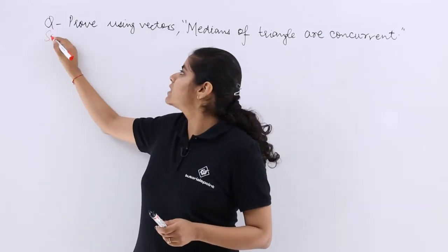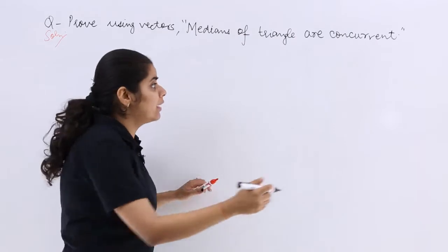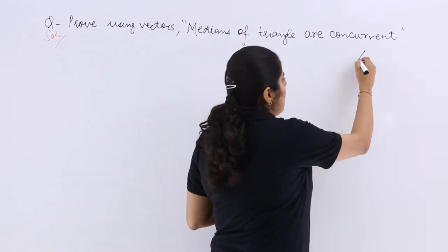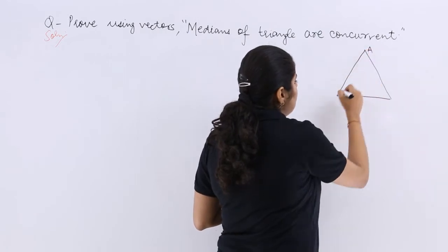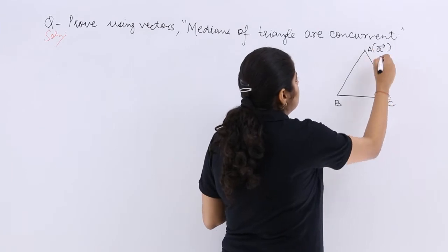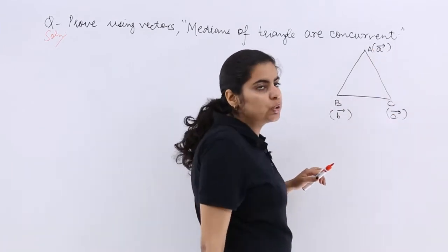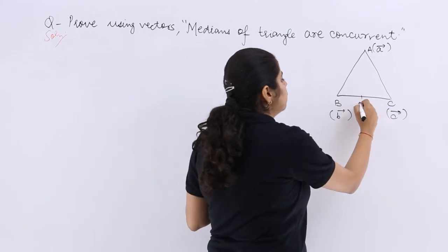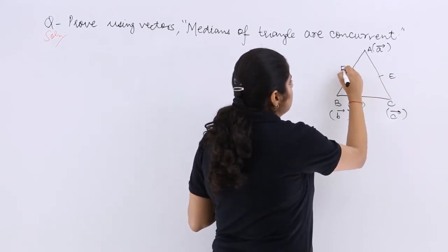Let me write the solution and let's actually go about proving this question. So I have a triangle in front of me and that triangle has ABC as its vertices. Now this is the position vector which is associated. Also I have the medians such that this is point D, this is point E, this is point F.